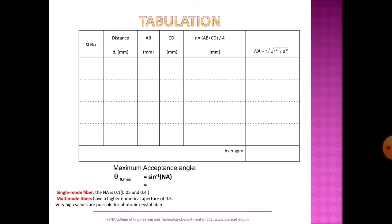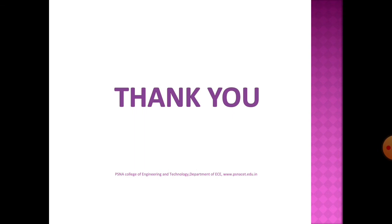Once the numerical aperture is known, the acceptance angle is found using: acceptance angle = sin⁻¹(NA). As per theoretical values, the numerical aperture for single-mode fiber is around 0.1, varying from 0.05 to 0.4. For multimode fiber, the value is somewhat higher at around 0.3, and for photonic crystal fiber the value may be even higher. In the next video, we will go to the real-time setup to determine numerical aperture through the trigonometric method.